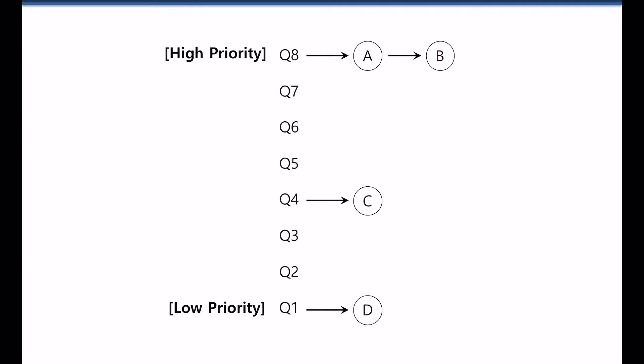This is an example. There are eight priority queues in the system and there are four jobs. Highest priority is Q8 and the lowest priority is Q1. A and B are in Q8, the highest priority queue, C is in Q4, and D is in Q1.